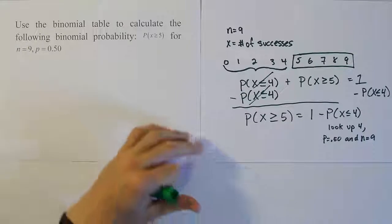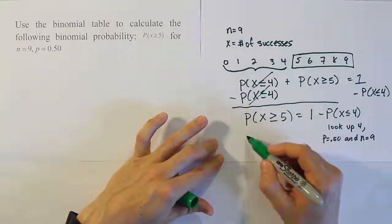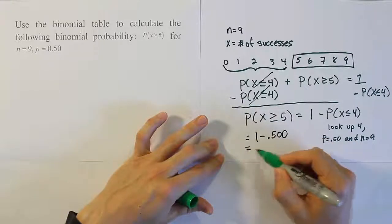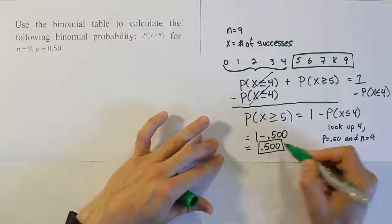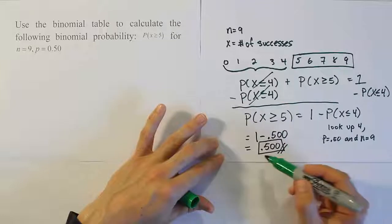So our table value is 0.5 for this probability. So this part was 0.5, so our answer becomes 1 minus 0.500, which of course is 0.500. That's the solution for our problem. The probability that x is greater than or equal to 5 is 50%.